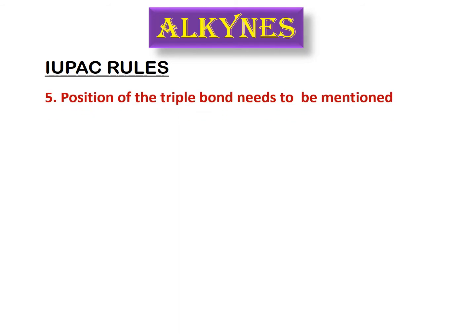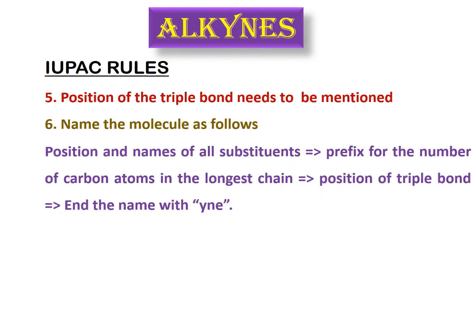Just like in alkenes, the position of the triple bond needs to be mentioned. The name of an alkyne is made up of certain fragments in this order: first, mention the positions and names of all substituents; then write the prefix for the number of carbon atoms in the longest chain — eth, prop, but, pent, hex, and so on; then mention the position of the triple bond; and finally, because this is an alkyne, end the name with -yne.